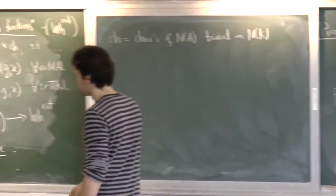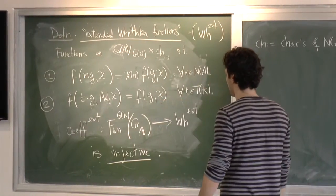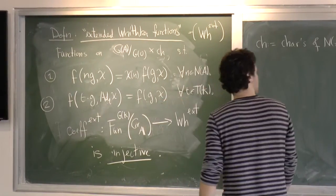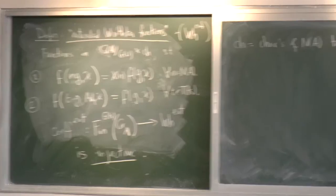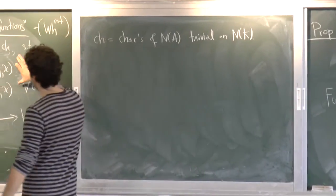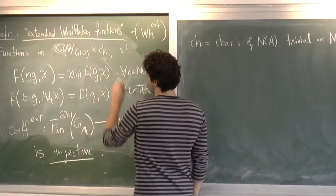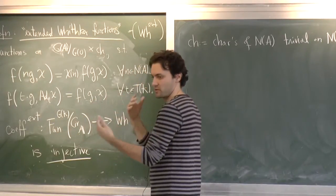And then now I rewrite this proposition by saying that the extended Fourier coefficient from automorphic functions to now this space of functions. So let me give a name. Whittaker Extended is injective. So it's in the notes, but if you think about it for a few seconds,